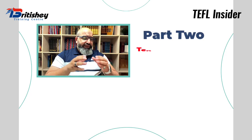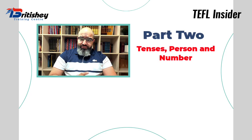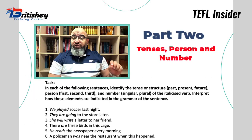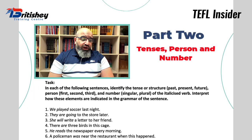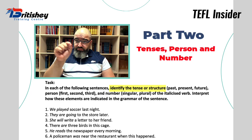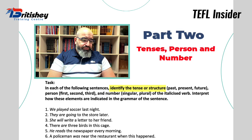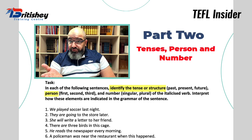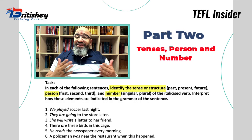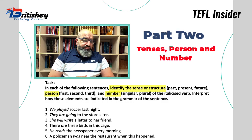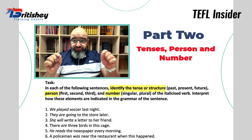Now let's go to part two. Part two is about tenses, person, and number. The task says: in each of the following sentences, identify the tense or structure, the person — first, second, or third — and the number — singular or plural — of the italicized verb.